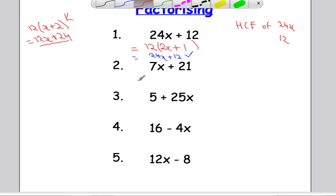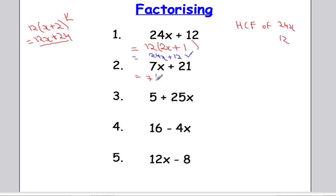Let's look at example 2. I'm going to look at both terms and ask: what's the highest common factor of 7x and 21? With a little bit of thought, hopefully we realise that 7 is the biggest thing that we can divide into both 7x and 21. What would I multiply 7 by to get 7x? It must be simply x. 7 times x is 7x. And what would I multiply 7 by to get 21? Well, 7 times 3 gives me 21. And again, if you want, you can expand this out to check your answer.